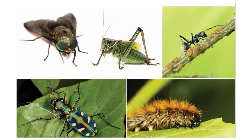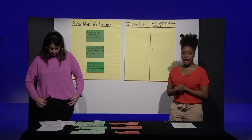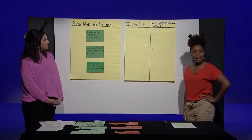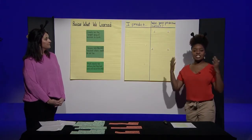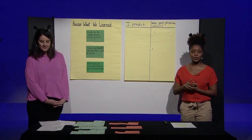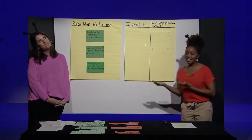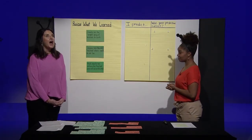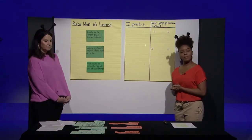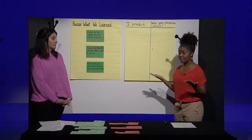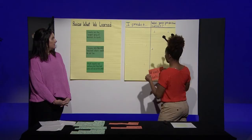Today we are going to learn what all insects have in common. But before we get started, we're going to make some predictions about insects. I have a prediction chart. A prediction is just a guess. I want you to predict some things that all insects have in common. Ms. Allison, can you make a prediction? I think that all insects eat plants. That's a very good prediction. Let's add it to our prediction chart.